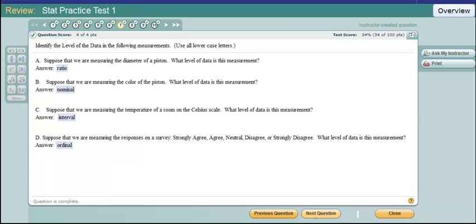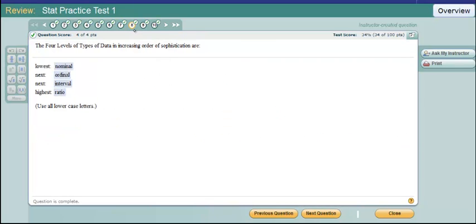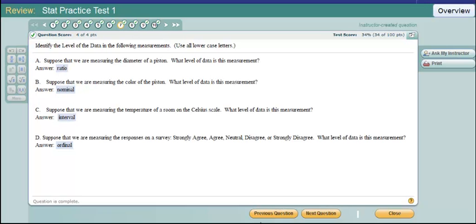Now we have our four levels of data. Actually our next question is this one. They're in order. Nominal, ordinal, interval, and ratio from lowest to highest. Notice the first letters spell the word NOIR. And we'll talk a little bit about each one of those here as we answer this question.